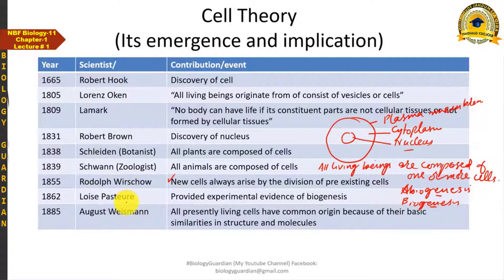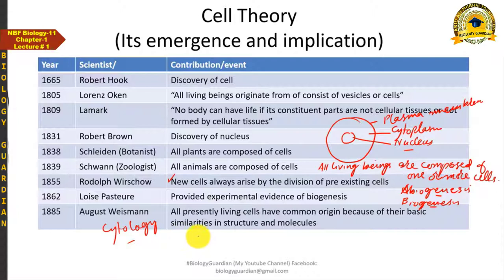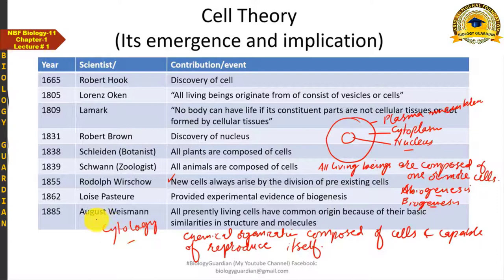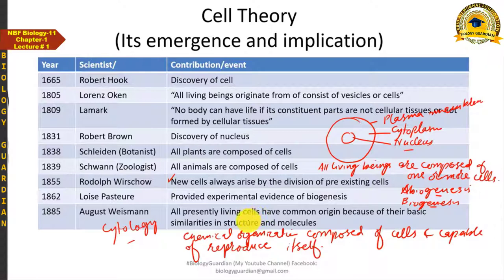After further developments in cell biology, a practical definition of a living being emerged: a living being is a chemical organization composed of cells and capable of reproducing itself. Then another major concept was added to cell theory's development: in 1885, August Weismann demonstrated that all presently living cells have a common origin because of their basic similarities in structure and molecules. This was the first proposal of the concept of common origin of cells.